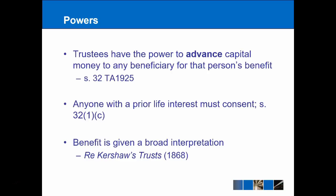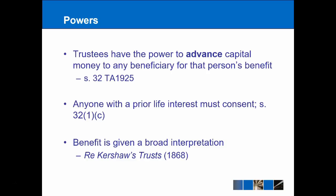Under section 32, trustees also have the power to advance capital money to any beneficiary for that person's benefit. This is no longer limited to child beneficiaries — it may be an adult beneficiary wanting to start a business and needing a lump sum instead of a business loan. Anyone with a prior life interest must consent per section 32(1)(c). Benefit is given a broad interpretation and doesn't have to be financial — for example, funding a gap year trip could be considered a benefit.